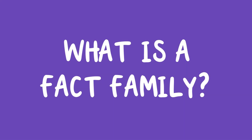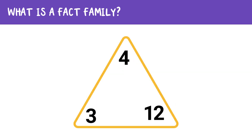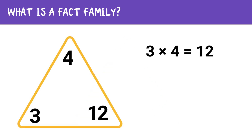So what is a fact family? To understand, let's look at the fact family made of the numbers 3, 4, and 12. If we put them in a triangle like this, we can see that they're connected. Here's how it works: if you know 3 times 4 equals 12, you also know that 4 times 3 equals 12.